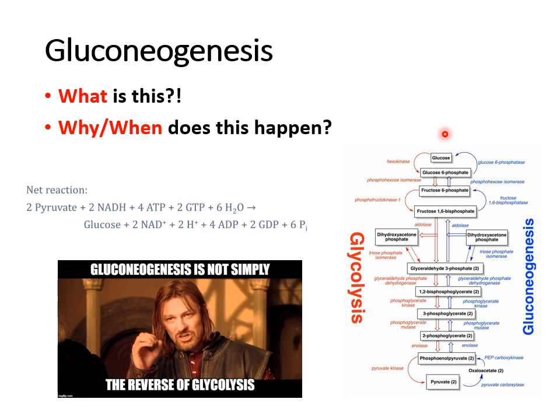Gluconeogenesis occurs when dietary sources of glucose are low. It occurs mostly in the cytoplasm, although the pyruvate carboxylase portion occurs in the mitochondria. The four major sources of carbon for glucose synthesis in gluconeogenesis are lactate, amino acids, glycerol, and in plants, carbon dioxide fixation.